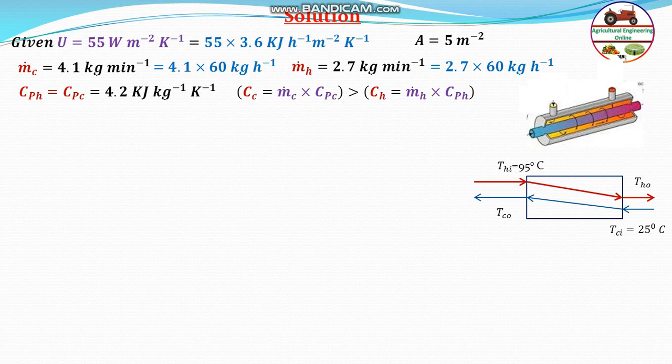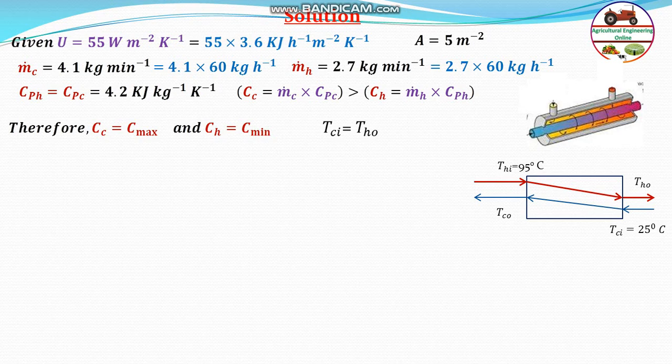In this case, the heat capacity rate of cold water is greater than that of hot water. Therefore, C_cold is C_max and C_hot is C_min. The boundary condition for this problem is that the cold water inlet temperature equals the hot water outlet temperature, because the hot water has a lower mass flow rate and most of its heat is removed. So TCI = THO is the key boundary condition.